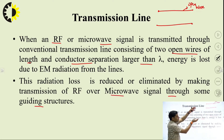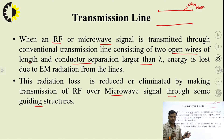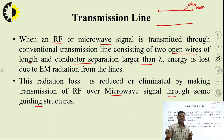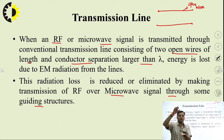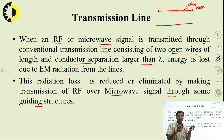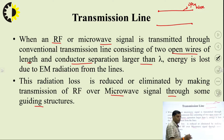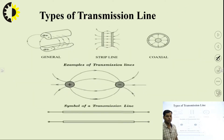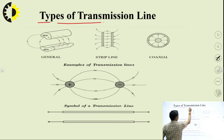If we keep the two wires in an open environment, there will be losses because they are in contact with the environment. Due to weather conditions, it may be affected. So we provide a guiding structure — meaning we cover it with some dielectric coating material — so that it can be protected from losses. This is the general introduction regarding the transmission line.